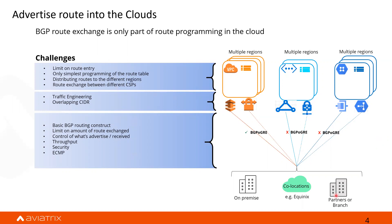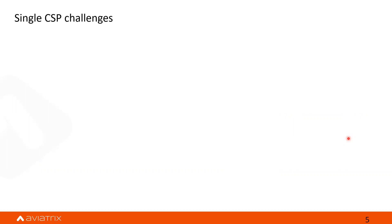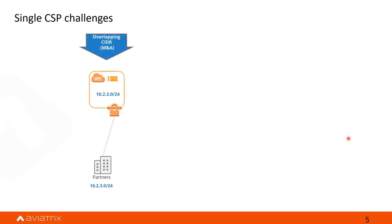Not all cloud providers support the same type of connections. For example, AWS supports BGP over GRE. In Azure and GCP, that construct is not supported. Some customers might say they only use one single cloud environment, so they don't worry about that. But what I see is that some of these challenges still apply. For example, a company might have a merger and acquisition that results in overlapping CIDRs, so that can still come up even for single-cloud customers.